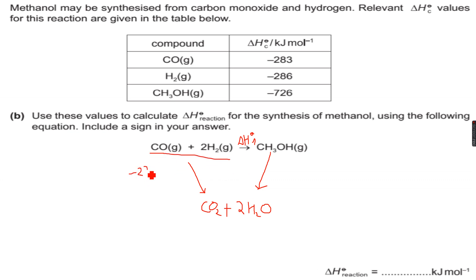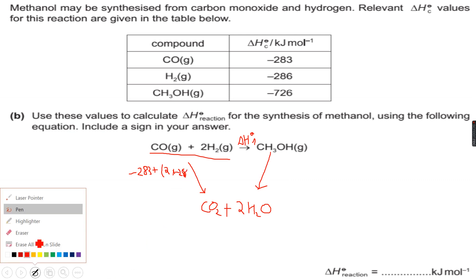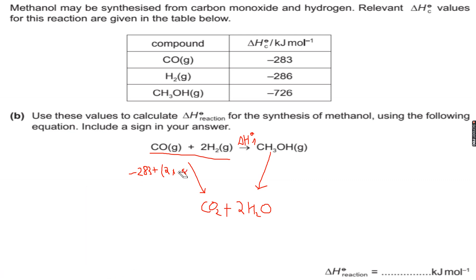This arrow is the sum of the enthalpies of combustion of these two. So it will be minus 283 plus two times minus 286, because two moles of hydrogen are being burnt. If two moles are being burnt, we'll have to multiply the enthalpy of combustion by two — so two into minus 286. And then this side will be minus 726.